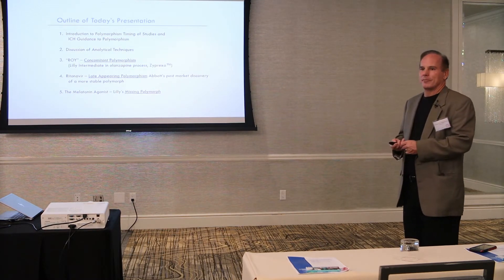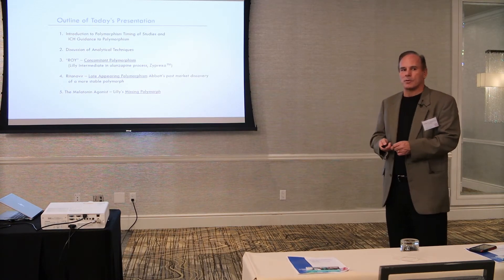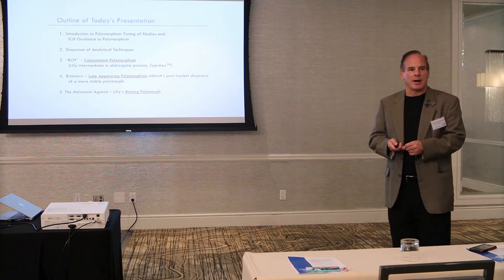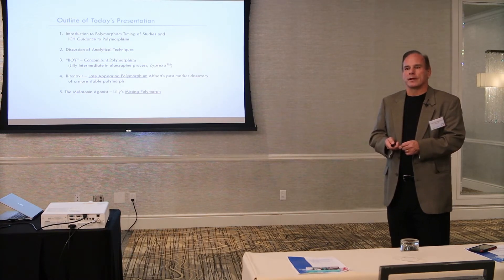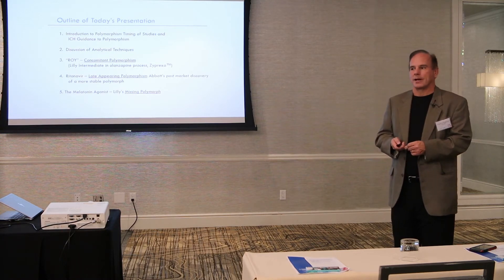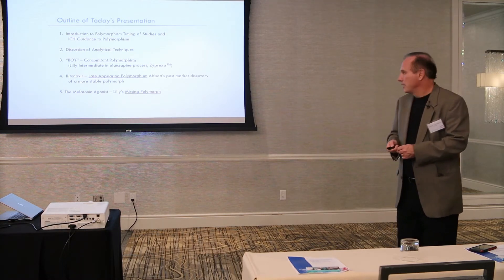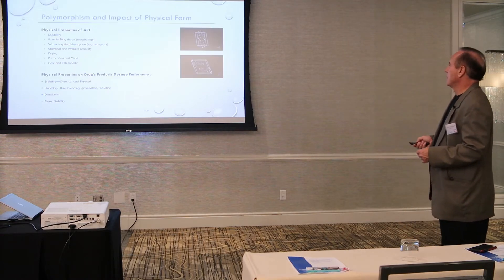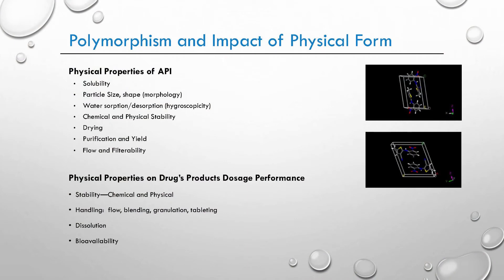In general, if you work hand-in-hand — process chemistry with a person knowledgeable in solid form relations — you can design processes that are very robust and can produce a single polymorph for product development and the final product. Polymorphism has a lot of different definitions, but the purest definition is that it's when molecules arrange themselves in a crystalline fashion in different ways such that they have different physical properties.